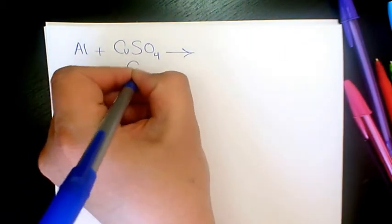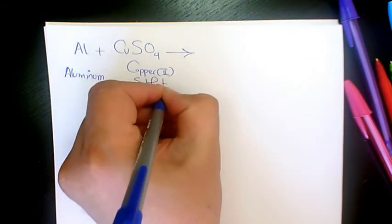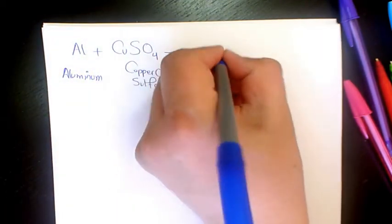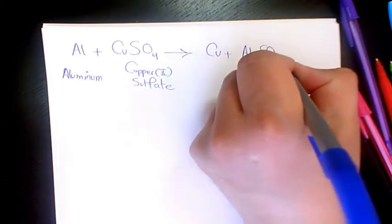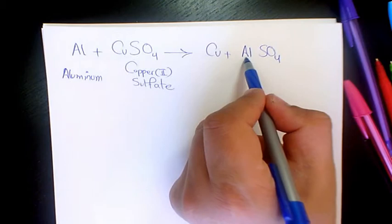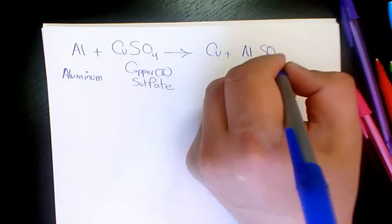is copper(II) sulfate. The product is gonna be Cu plus Al2(SO4)3. The charge for SO4 is negative 2. The charge for Al is positive 3, so we're gonna write it as